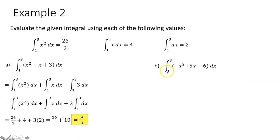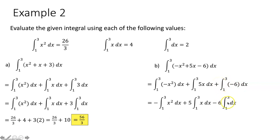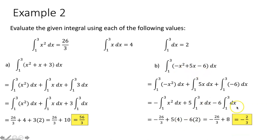For part b, we do the same thing with the integral from one to three of negative x squared plus five x minus six dx. We split it into three integrals. For negative x squared, we move the negative out front and use the integral from one to three of x squared dx, which equals twenty-six thirds. We move the five out front for the x term and use the integral from one to three of x dx, which equals four. We move the negative six out front and use the integral from one to three of dx, which equals two. Simplifying, this definite integral equals negative two thirds.